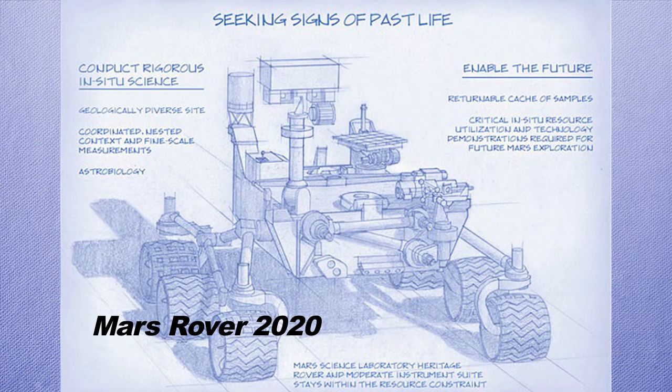For the Mars 2020 rover, it was easy to move to Phase A because there are some high-level requirements — they want to keep the budget within $1.5 billion. At that budget, the only way to do a rover on Mars the size of an SUV is to reuse a lot of technology and equipment from the past. So this rover will be basically designed around the Curiosity spare parts and Curiosity technologies.